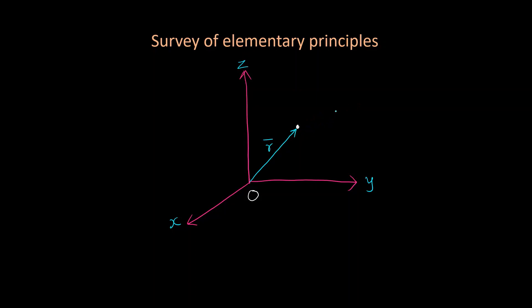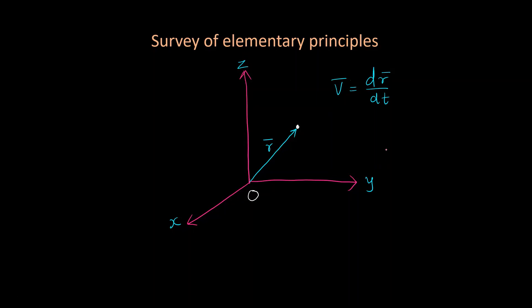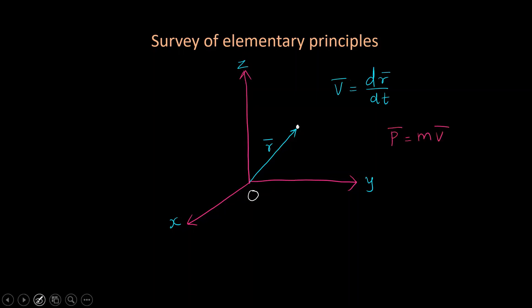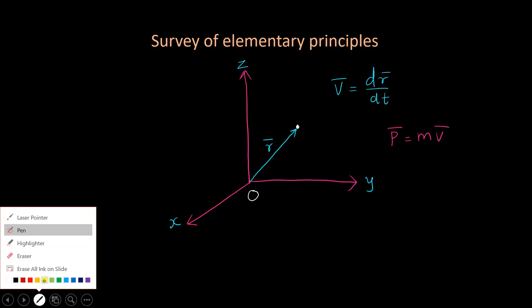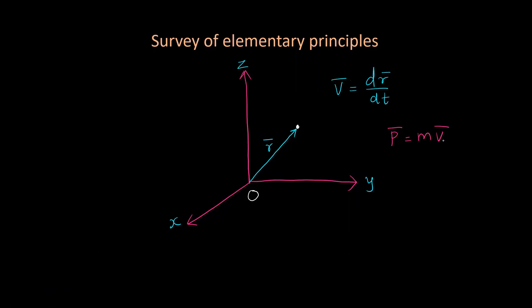The position vector can change with respect to time, meaning dr-bar by dt can be a non-zero quantity, and this quantity is known as velocity. Since it is a vector quantity, velocity v-bar equals dr-bar/dt. We know that momentum is given by p-bar equals m times v-bar, where m is the mass of the particle, and the direction of momentum is the same as the direction of velocity.